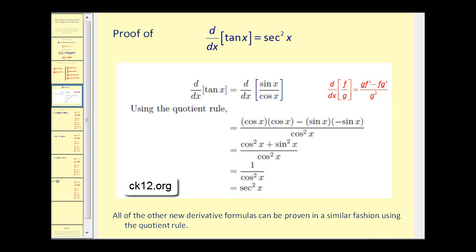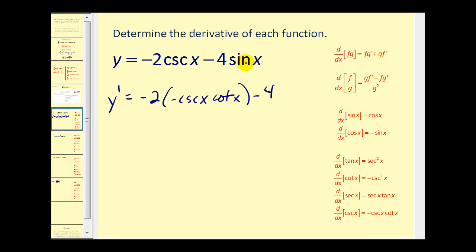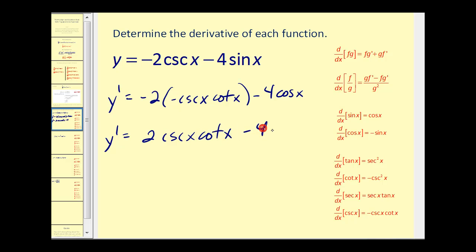Let's go ahead and take a look at some problems — we want to determine the derivative of each function. First, y = -csc x - 4 sin x. On the right I have all the formulas we may need, but eventually you should have these memorized. So y' = -2 times the derivative of cosecant x, which is -csc x cot x, minus 4 times the derivative of sine, which is cos x. Simplifying, y' = 2 csc x cot x - 4 cos x.